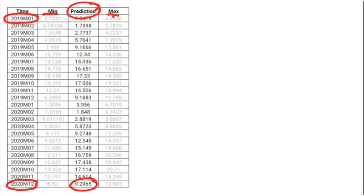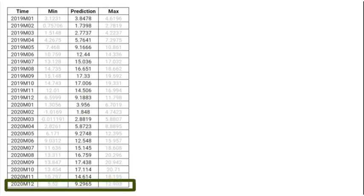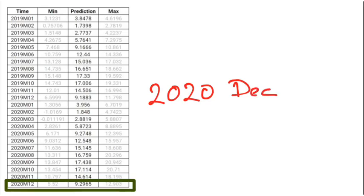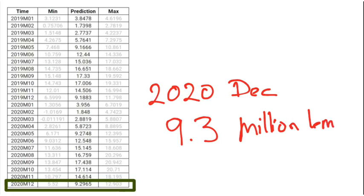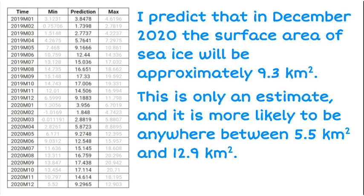I want to choose one particular time period — the very last one — and write up and explain what that prediction is about. So for December 2020, I predict there's going to be approximately 9.3 million square kilometres of sea ice at that time of year. However, it could be anywhere between 5.5 million square kilometres and 12.9 million square kilometres. I'm identifying that this is only an estimate, which is why I'm giving this prediction interval — first making an approximation, a point estimate we call that.